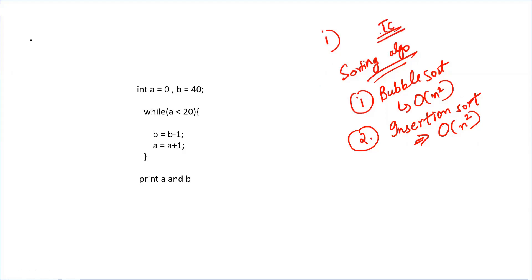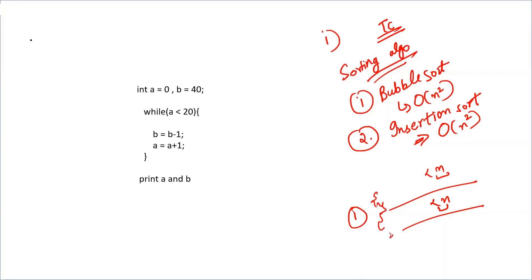One question had two independent for loops, each running up to less than n. Since the two for loops are independent of each other and both depend linearly on the input n, the time complexity is O(n). If you have clear concepts regarding time complexity, you will be able to solve these questions in just a few seconds.